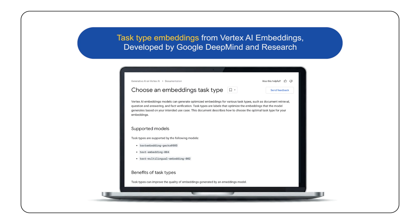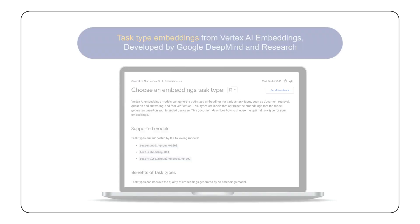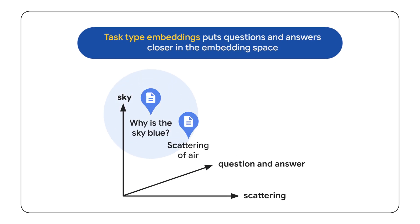The Vertex AI Embeddings API recently launched new text embedding models developed by the Google DeepMind and research team. These models are unique because they generate optimized embeddings for specific tasks like question answering, document retrieval, and fact verification. With these new models, you can achieve higher search quality without the time and expense of developing dual encoder models or advanced RAG systems. To generate embeddings for question answering, specify the task type 'question_answering' for query texts and 'retrieval_document' for answer texts — the embedding model generates optimized embeddings that represent the question-answer relationship, bringing embeddings for 'why is the sky blue' and 'the scattering of air' closer in the embedding space.